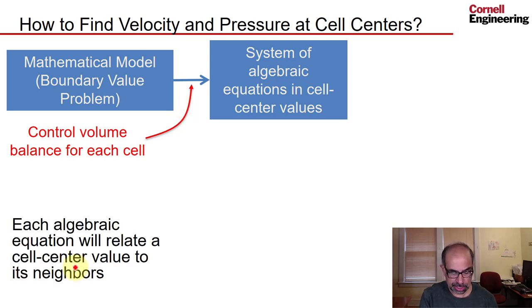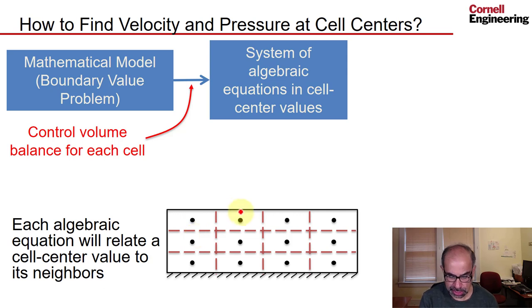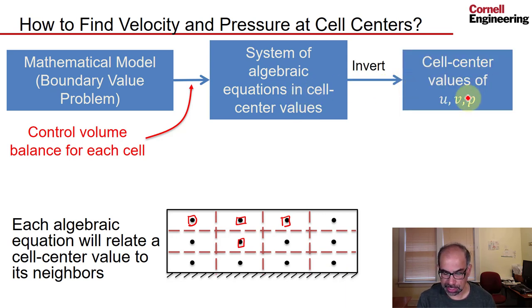And each algebraic equation relates a cell center value to its neighbors. So for instance, if I write mass conservation for this cell involving this cell center value, I will get an algebraic equation relating the velocities at this cell center to the velocities only at these neighbors. For instance, the other values like this value would not be involved in that algebraic equation.